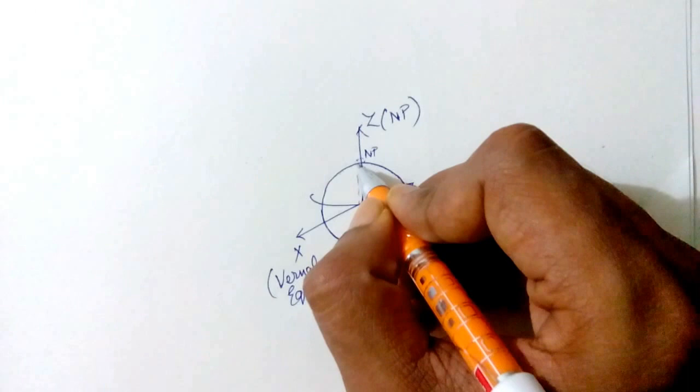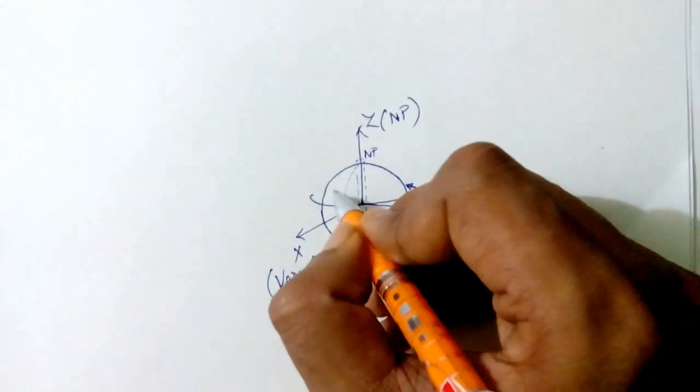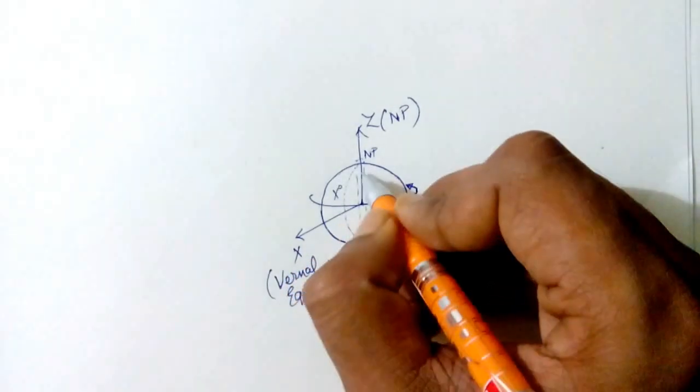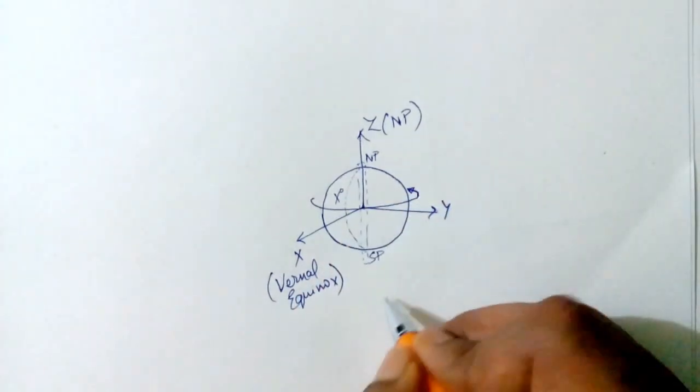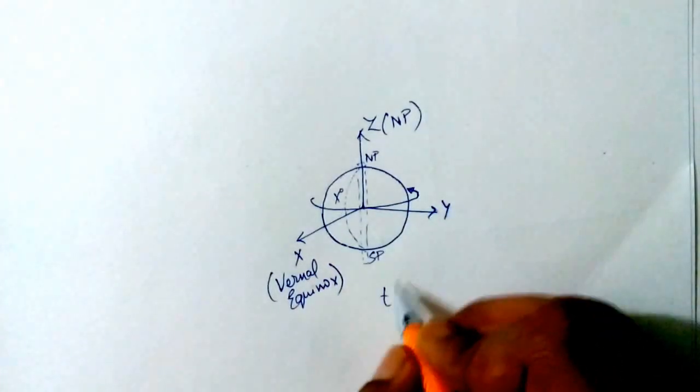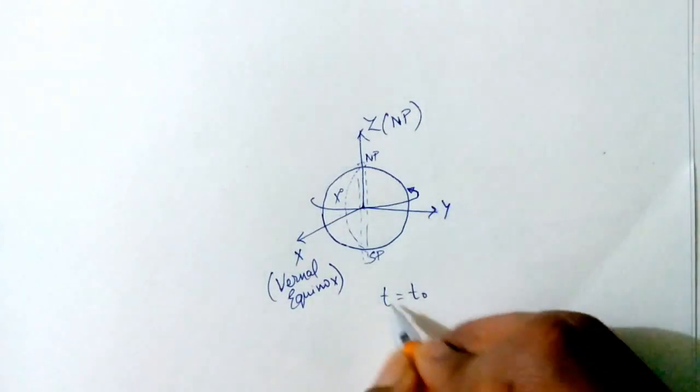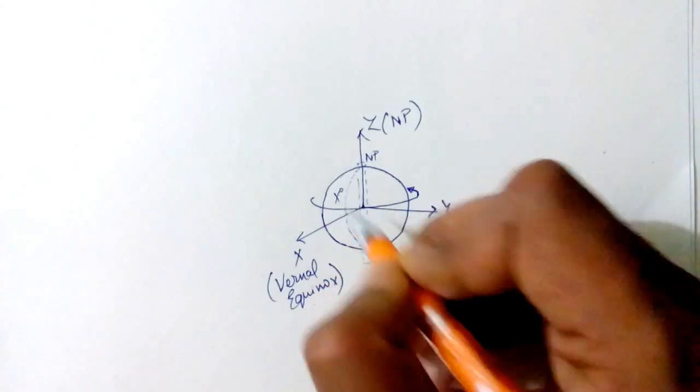To make it more clear, let me give you an example. Suppose this is an x degree longitude. This is the position of x degree longitude at time t. Let's call the time t equals t0. At time t equals t0, this is the position of x degree longitude.